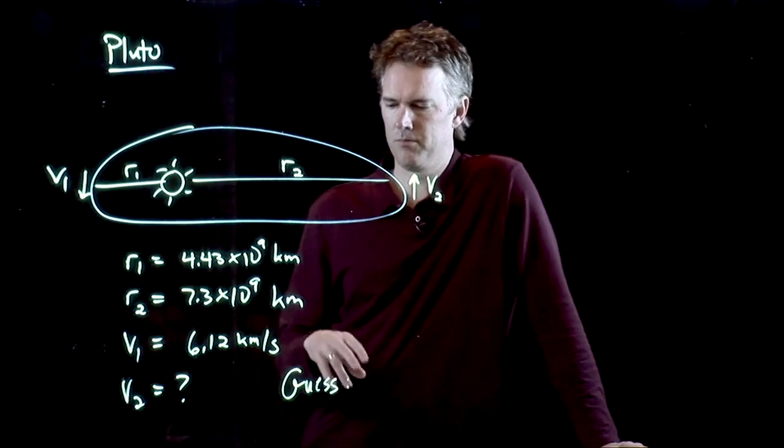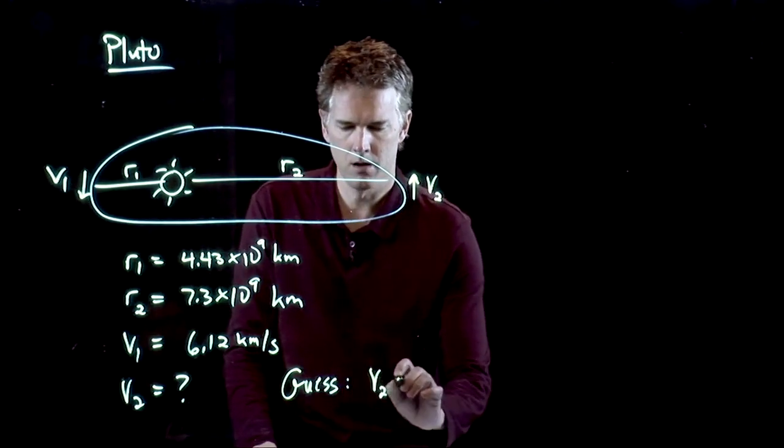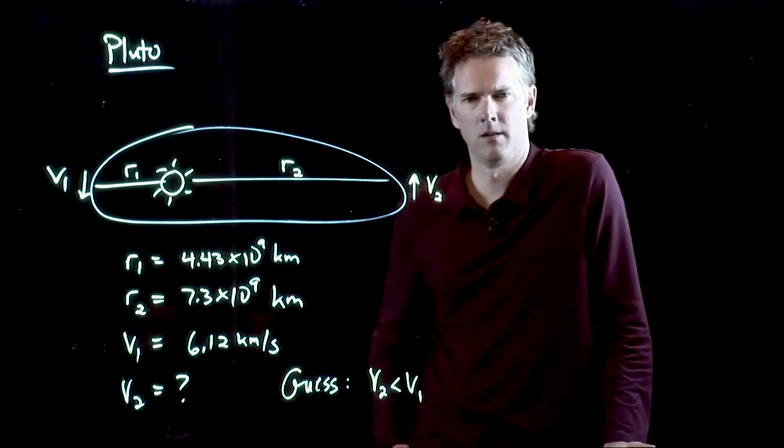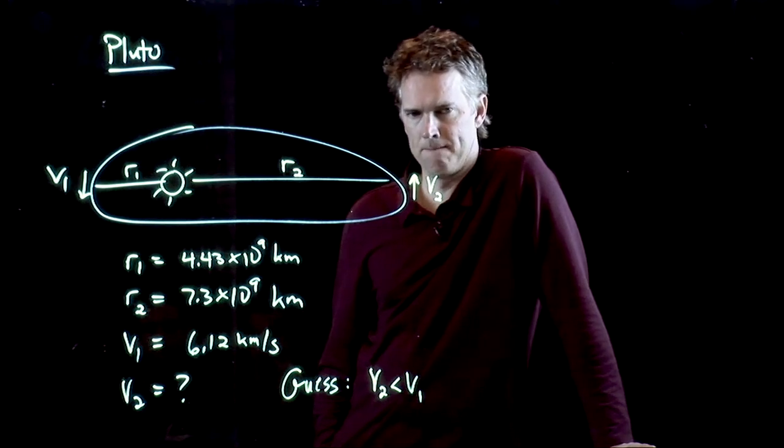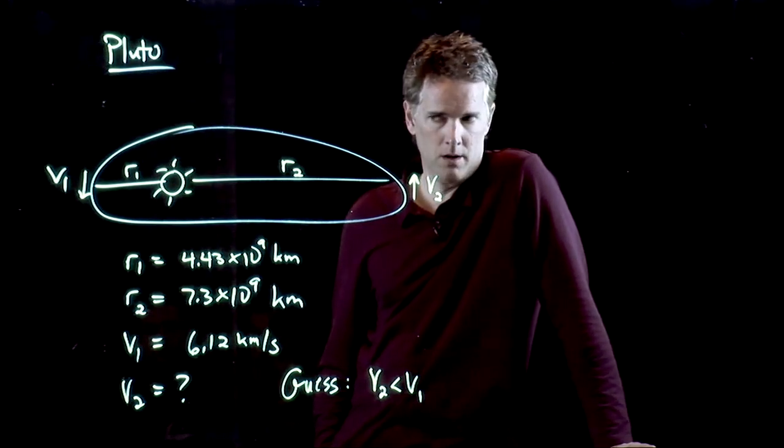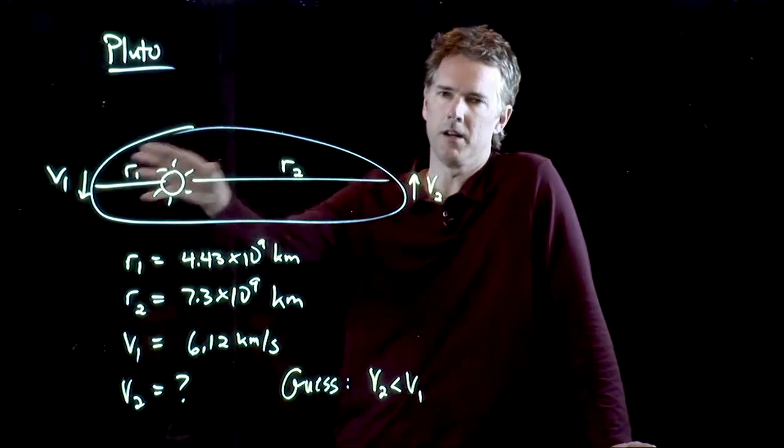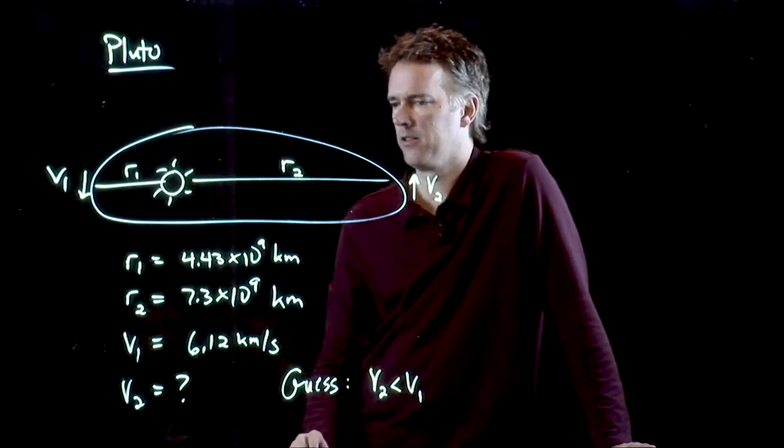Jamie, we just took a guess that V2 would be smaller than V1. Why do you think that? The distance is total, so the speed would have to be smaller for the area to be equal. Exactly right. If Kepler's second law is going to hold, then equal areas and equal time says that V2 has to be smaller than V1.